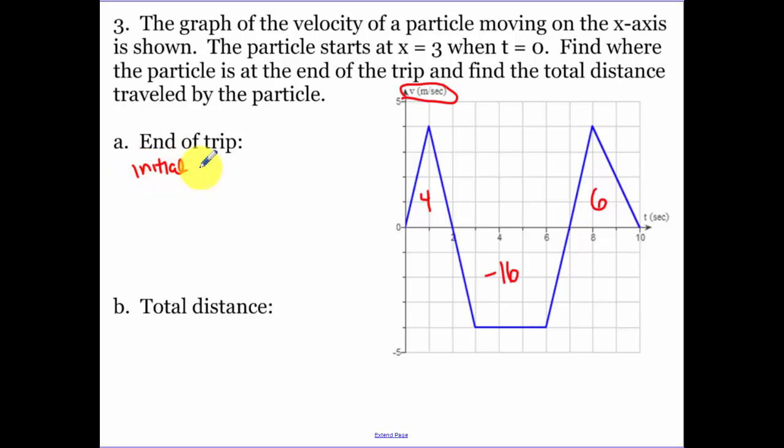So at the end of the trip, initial plus our displacement. So our initial position is three. Initial position was three. We add to that the area under our curve, so that's 4 minus 16 plus 6. So that is a negative three, and I have units that give me units meters. Now the total distance traveled. The total distance that I've traveled is 4 plus the absolute value of 16 plus 6, which is going to get us 26 meters.